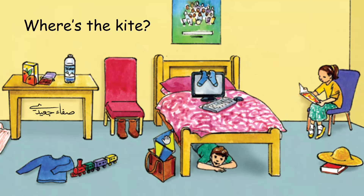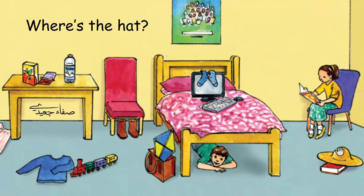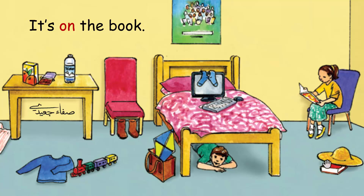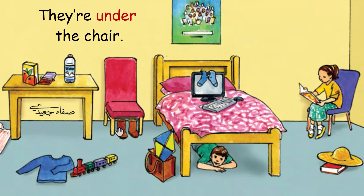Where's the kite? It's in the bag. Where's the hat? It's on the book. Where are the boots? They are under the chair.